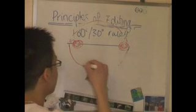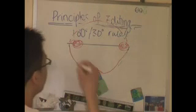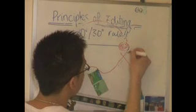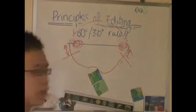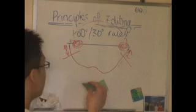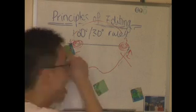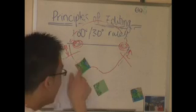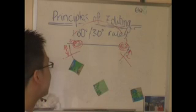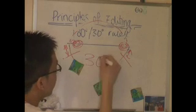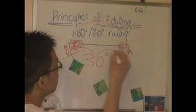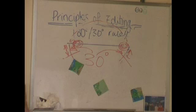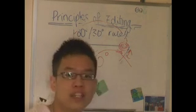And now onto the 30-degree rule. Let's draw my line back. 30 degrees there. When you place your camera, make sure it's not there, not there — put it there, or here, anywhere here. The notch there — it's got to be at least 30 degrees. There's a gap there. And I think that's self-explanatory, really.